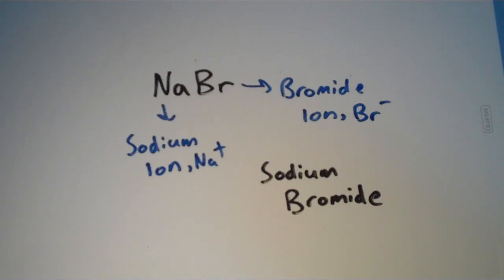Notice we don't have to use a Roman numeral here because sodium is a group 1A metal so it only forms a plus one cation. So sodium, lithium, potassium, rubidium, cesium, all of those metals only form the plus one cation, and so a Roman numeral is unnecessary.